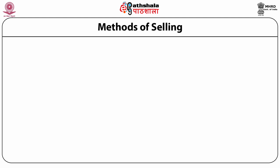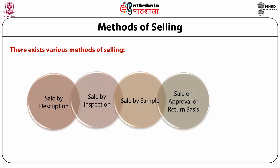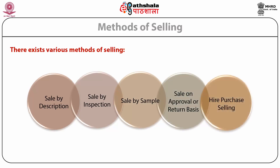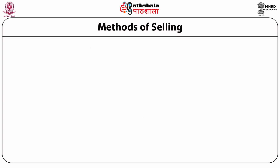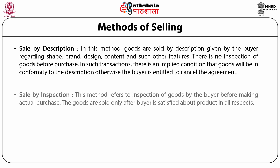Various methods of selling are: sale by description, sale by inspection, sale by sample, sale on approval or return basis, and hire purchase selling. In sale by description, goods are sold by description given by the buyer regarding shape, brand, design, content, and other features. There is no inspection of goods before purchase. In such transactions, there is an implied condition that goods will be in conformity with the description; otherwise, the buyer is entitled to cancel the agreement.